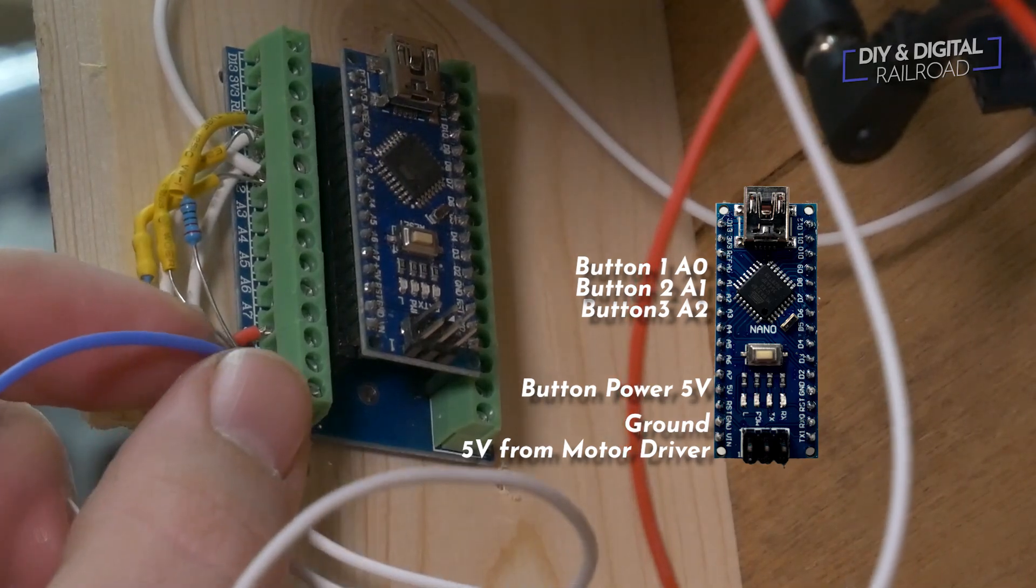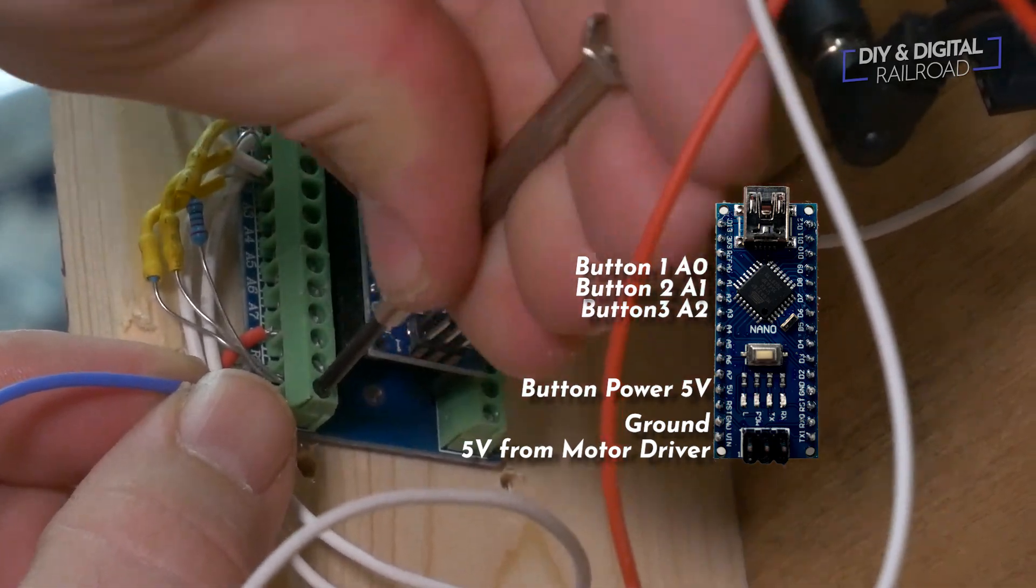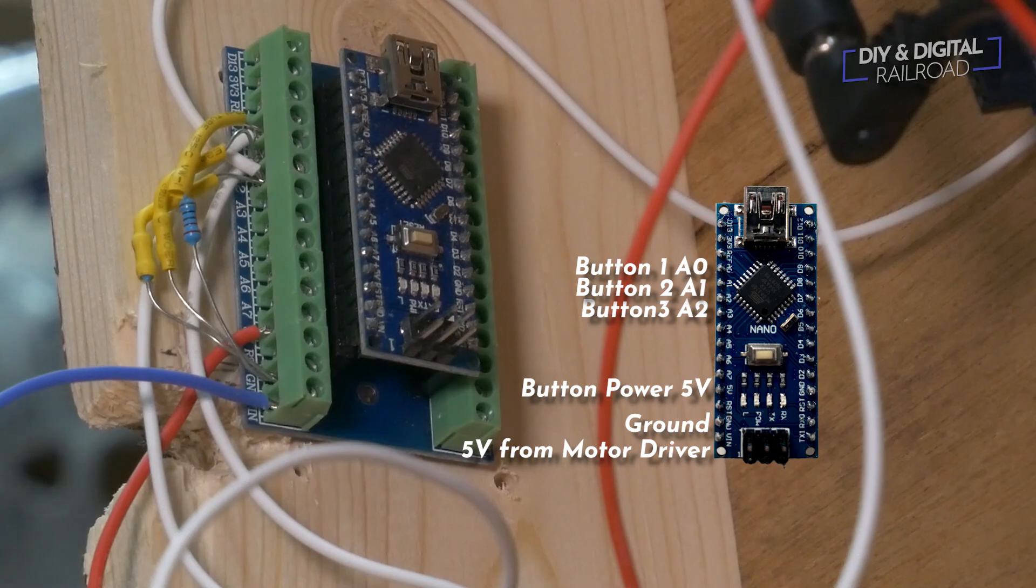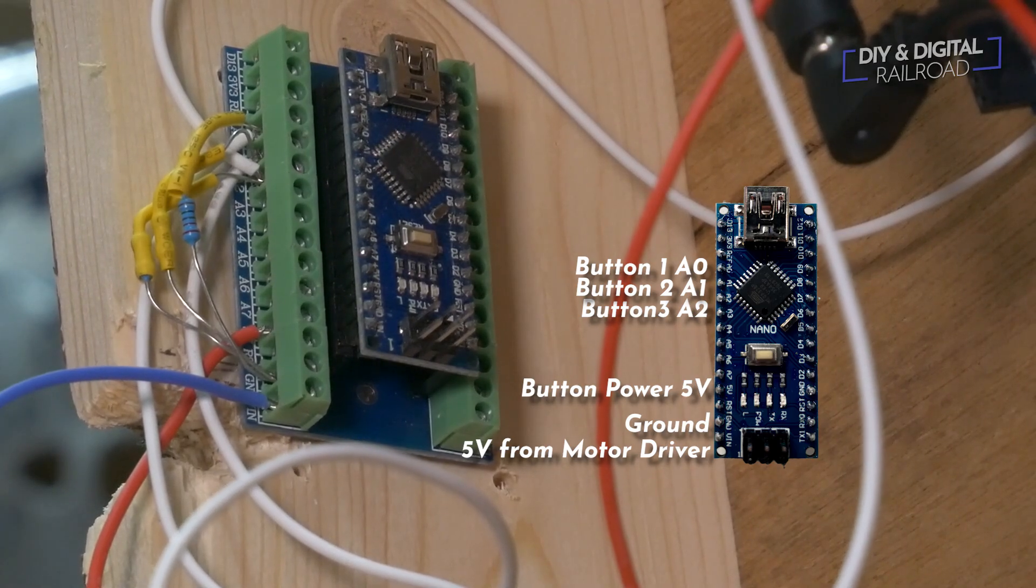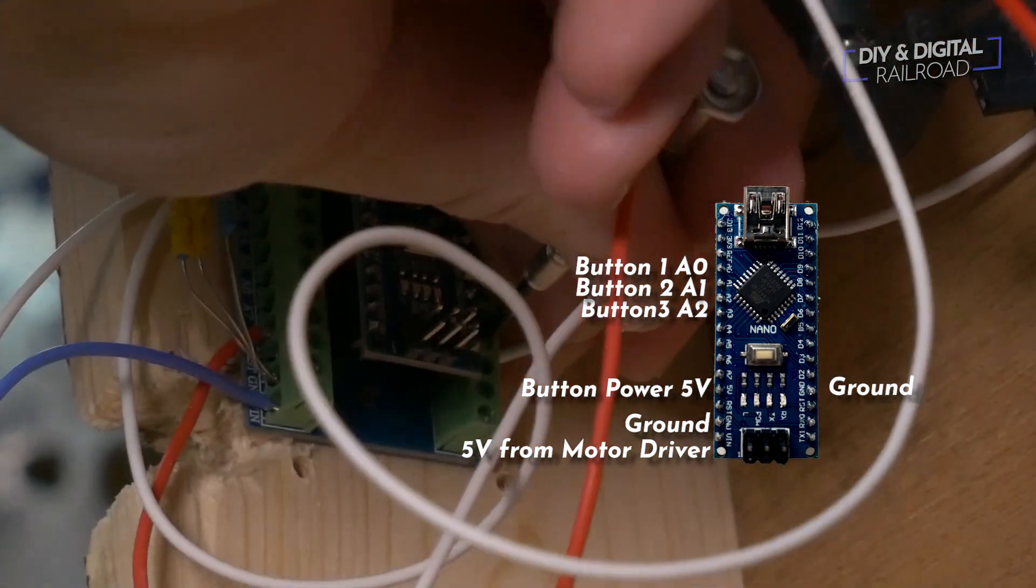Next I connect the VIN and ground power for the Arduino. We connect this from one of the motor drivers, it doesn't matter which. We take the 5-volt pin out of the motor driver and into the VIN pin of the Arduino, and then we take the ground from the motor driver and connect it into the ground of the Arduino.